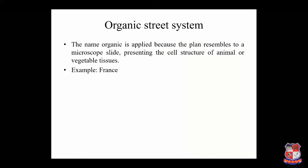The last type is the organic street system. The name 'organic' is applied because the plan resembles a microscope slide presenting the cell structure of animal or vegetable tissues. The street system is entirely unplanned, with all irregularities. The streets are curved and sometimes discontinuous with variable width. France is an example of this type of system.